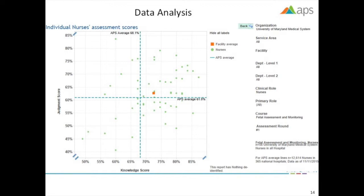And then on the vertical line, the APS average for judgment. So you can see where nurses in your organization fell relative to the other hospitals. So it's kind of a benchmarking.